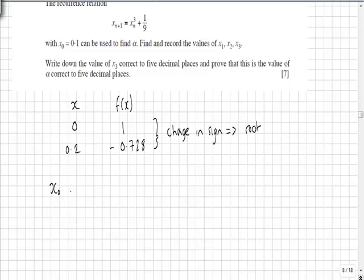Calculate up to x₃ to 5 decimal places. So first of all with x₀ = 0.1, that would give a value of x₁ = 0.112111.